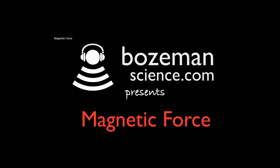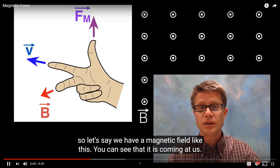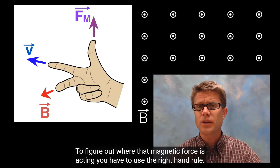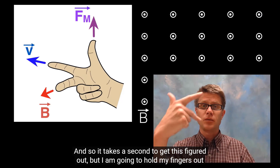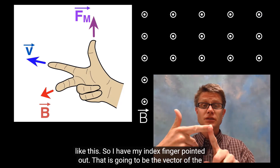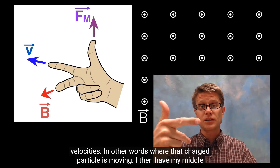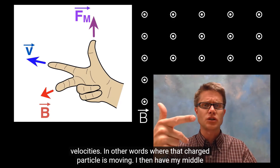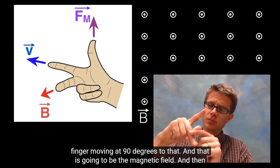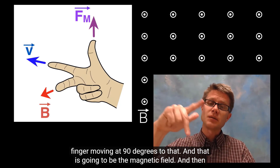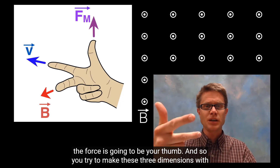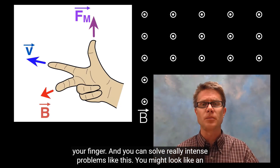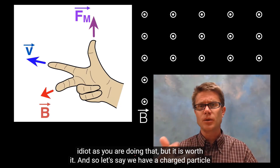Here's an alternative way of making the same determinations, from the Bozeman Science YouTube channel. Let's say we have a magnetic field coming at us. To figure out where the magnetic force is acting, use the right-hand rule: hold your index finger out in the direction of the velocity — where that charged particle is moving. Your middle finger points at 90 degrees for the magnetic field, and your thumb indicates the force direction. You might look like an idiot as you're doing that, but it's worth it.